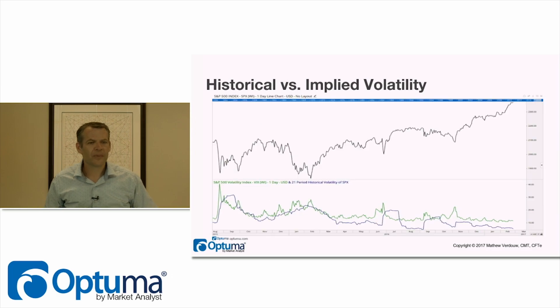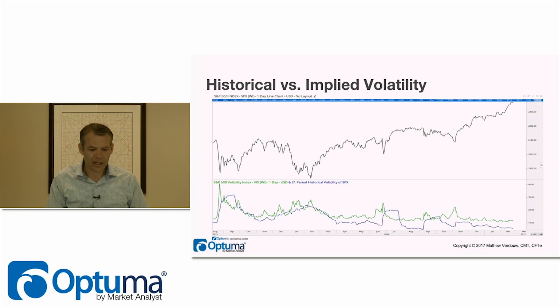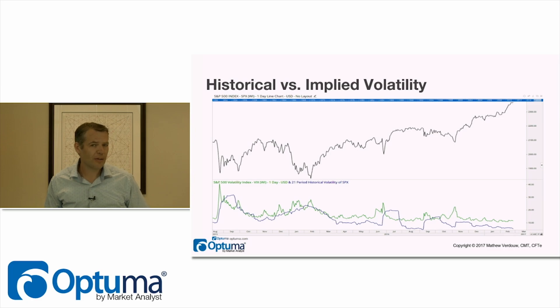Here's the chart highlighting the S&P. I've got the S&P on top. In the bottom pane, the blue line is our historical volatility set to 21 days — roughly one month — and then we have our implied volatility. With the VIX, that's the 30-day implied volatility. We'll talk a lot more about that in this session and also in the next session, which focuses on the VIX.